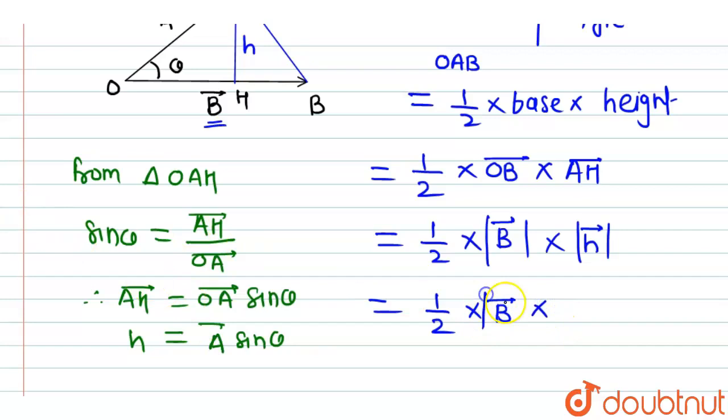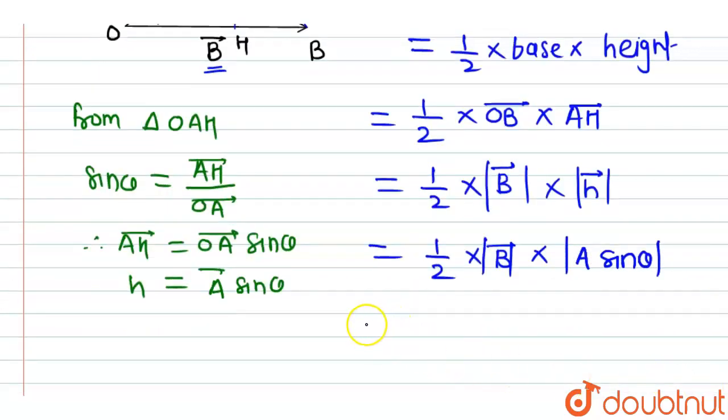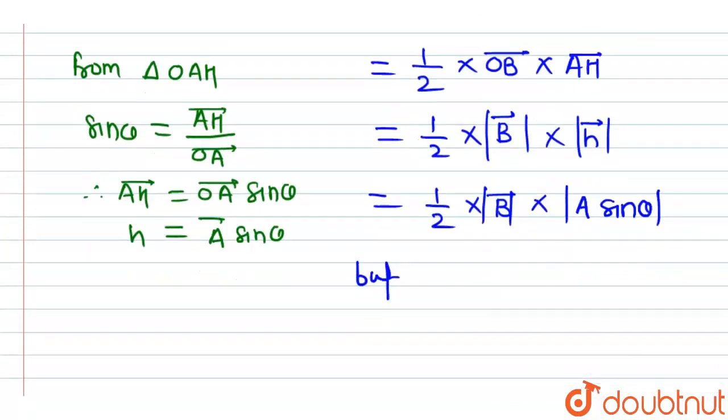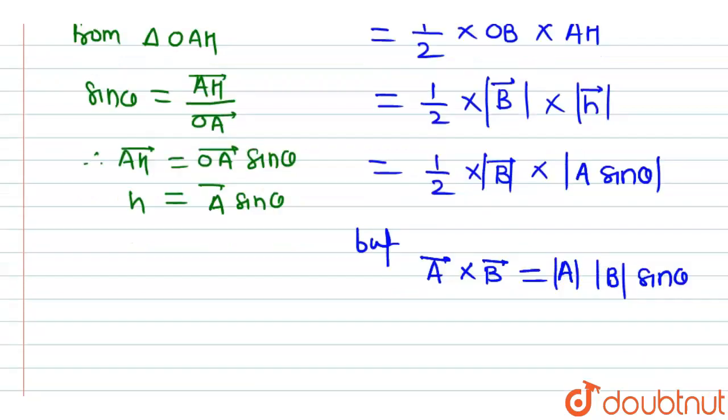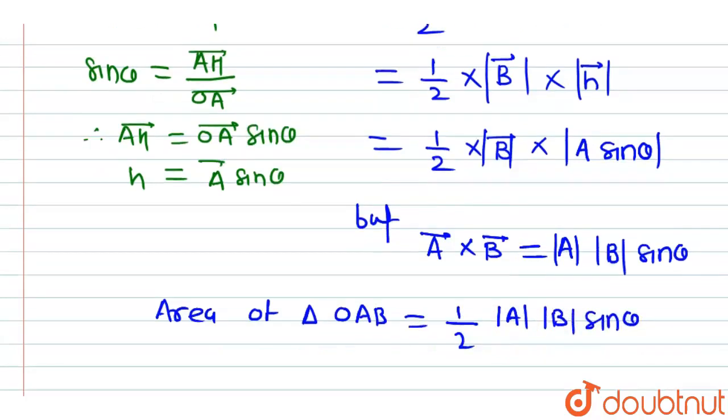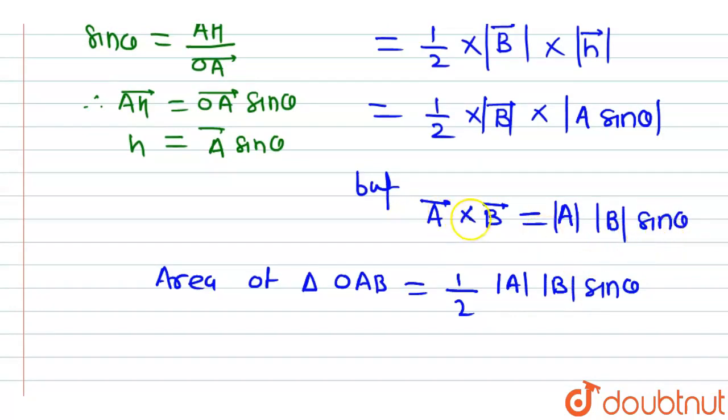It will be equal to one-half times mod of B bar times mod of A bar times sin theta. But we know that the vector product of A bar cross B bar will be equal to mod of A bar times mod of B bar times sin theta.